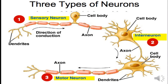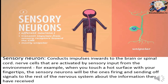There are three types of neurons. The first is the sensory neuron, the second is the interneuron, and the third is the motor neuron. The first type, sensory neurons, also called afferent neurons, transmit impulses from sensory receptors toward the central nervous system. For example, when you touch a hot surface with your fingertips, these neurons fire and send signals to the rest of the nervous system. They are present in the sense organs, hence the term sensory neuron.